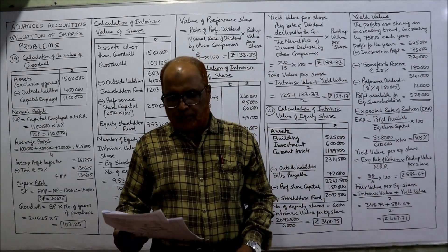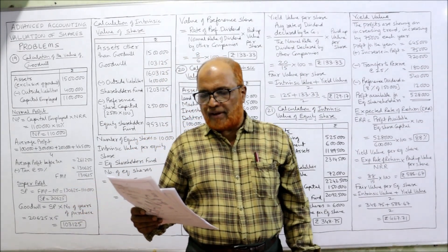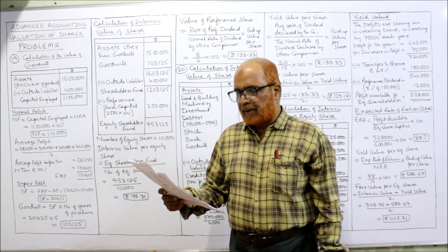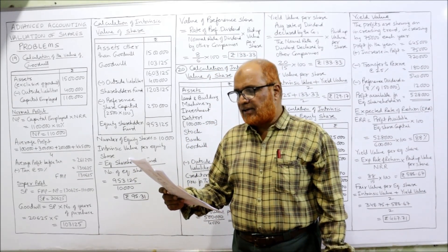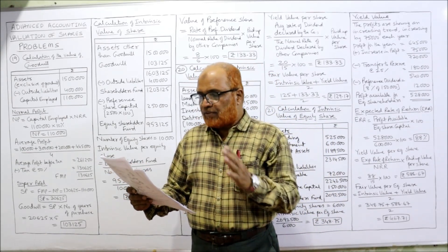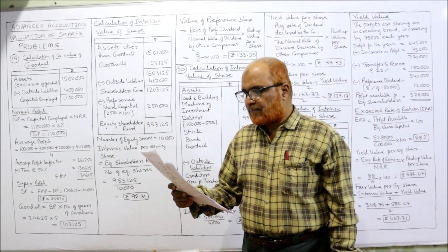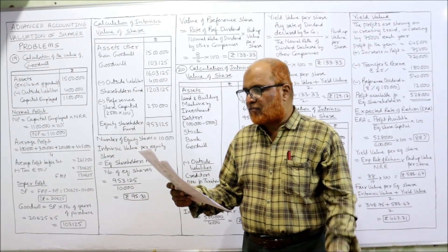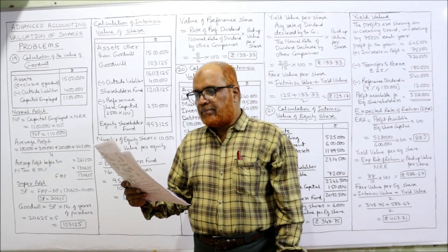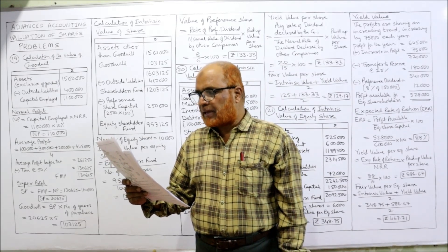Now see problem number 19. The share capital of XY Limited consists of 10,000 equity shares of ₹100 each, ₹50 paid, and 2,500 eight-percent cumulative preference shares of ₹100 each, fully paid. The balance sheet shows assets exclusive of goodwill at ₹15 lakh, liabilities ₹4 lakh, reserves ₹3 lakh 50,000, and paid-up capital ₹7 lakh 50,000.